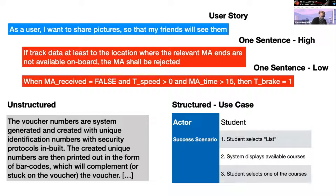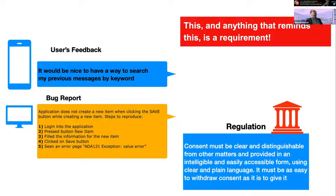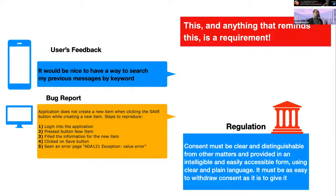We have also seen other forms in presentations this morning — papers working on user feedback, in particular app reviews analysis. App reviews and user feedback from Twitter represent a form of requirement because they include information about users' actual needs. Even bug reports are requirements because they specify what needs to be changed. Finally, regulations can be regarded as requirements — for example, when writing a privacy policy for an app, I have to abide by the GDPR.